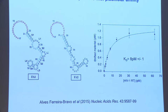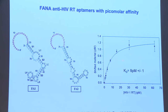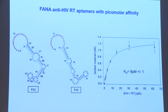My colleague Jeffrey DeStefano has also been making aptamers against HIV reverse transcriptase — these are picomolar binders, so they're really excellent, and this is in the fluoro-arabino framework. Clearly there's a fairly general opportunity to generate binders in this framework.